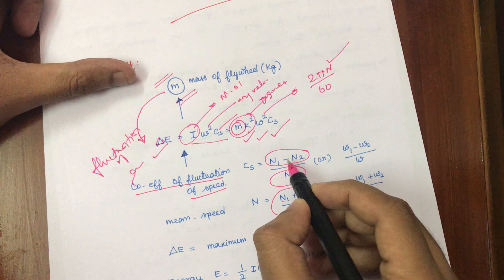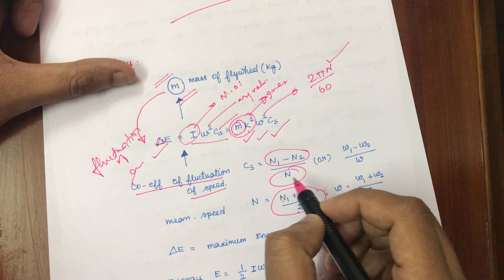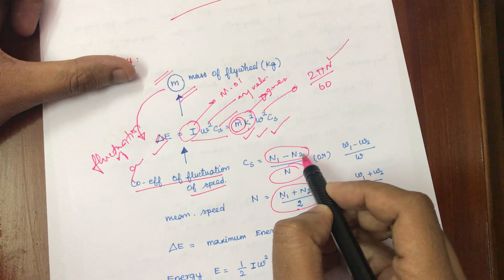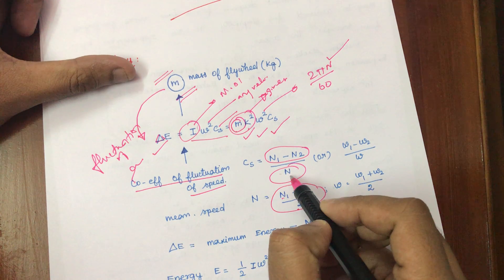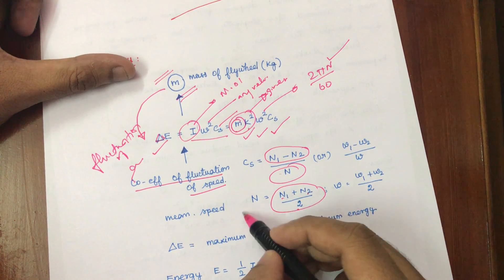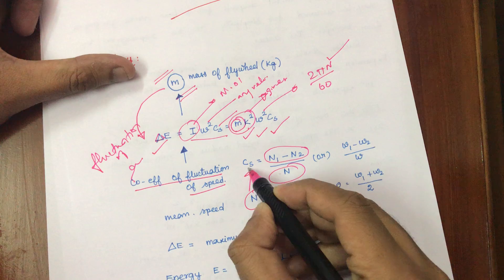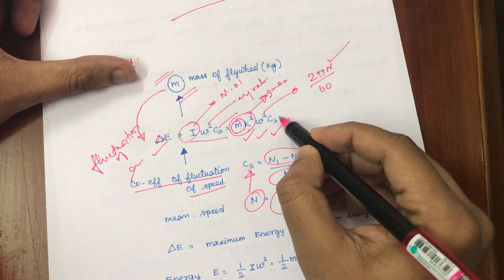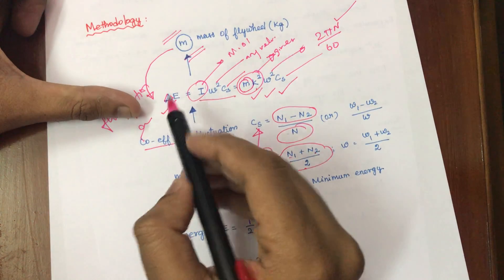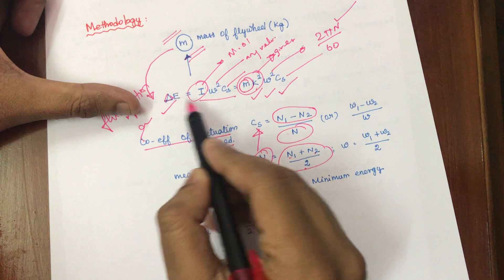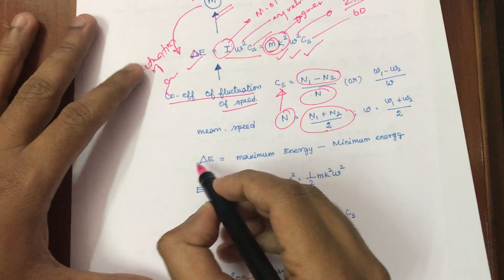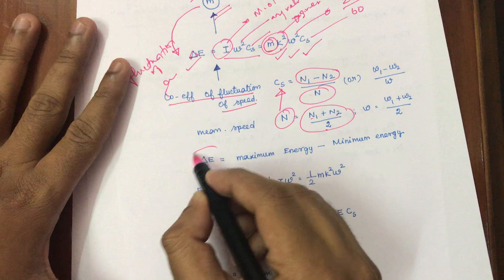You can write Cs in RPM — both are the same. N1 is the maximum speed. We have to find the difference and divide by the mean value. Once we calculate N, we can calculate the Cs value. The major thing is we have to calculate del E. Del E and other elements — that is the difficulty of the problem.